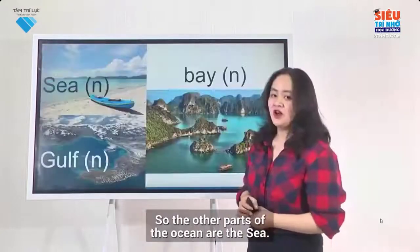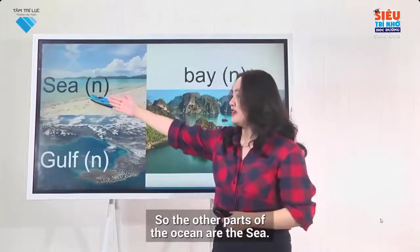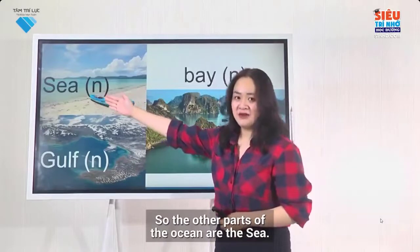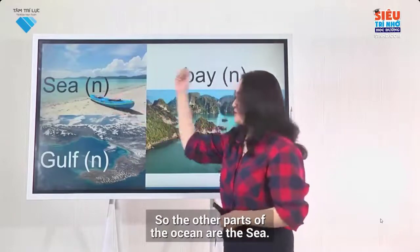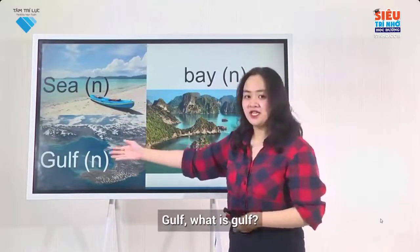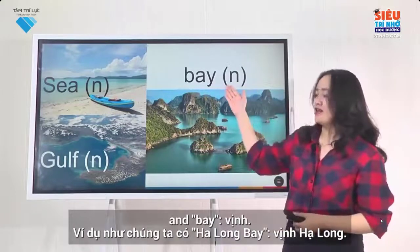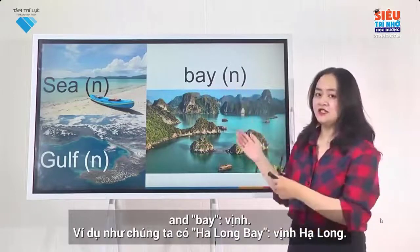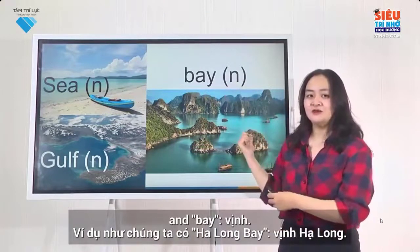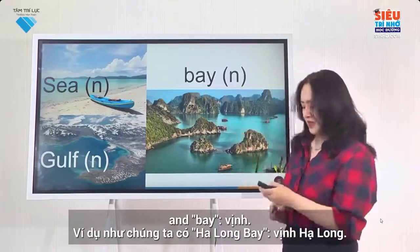The other parts of the ocean are the sea — biển, gulf — vịnh biển, and bay — vịnh. For example, we have Ha Long Bay, which means Vịnh Hạ Long.